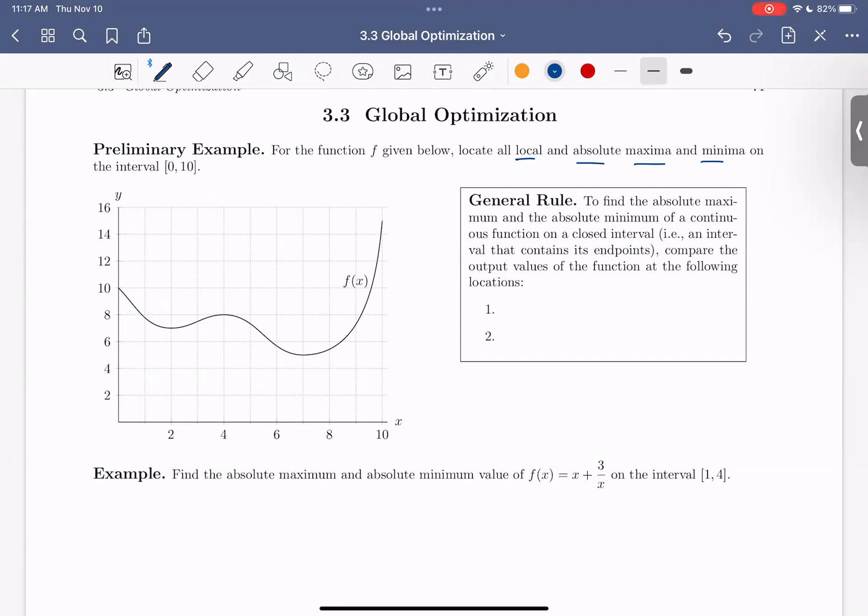As you look, you'll notice that our overall or absolute minimum occurs here. So absolute min here. And if we find our absolute max, we see it occurs all the way up here. Absolute max.